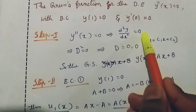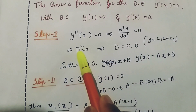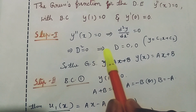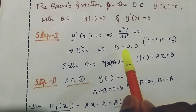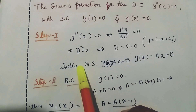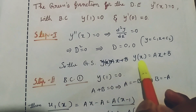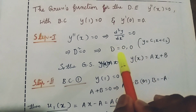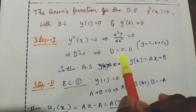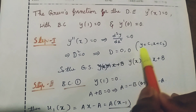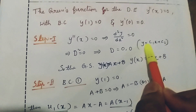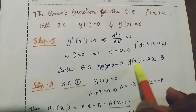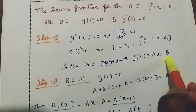Step one: the given differential equation is y double dash of x equal to zero, that is d squared y by dx squared equal to zero. Then d squared equal to zero, so the roots are d equal to zero and zero. The general solution becomes y of x equal to ax plus b.